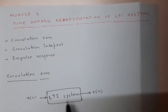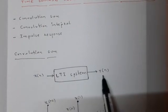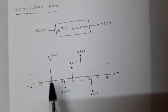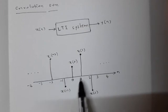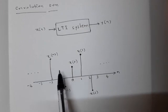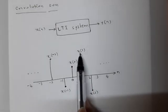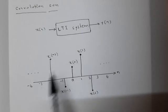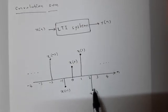Let us consider a LTI system which has input x(n) and output y(n). This input x(n) is any arbitrary sequence, as shown below. This input sequence x(n) has delayed impulses with different weights. Weights here are the amplitudes of the signal x(n). x(0), x(1), x(2) are weights.